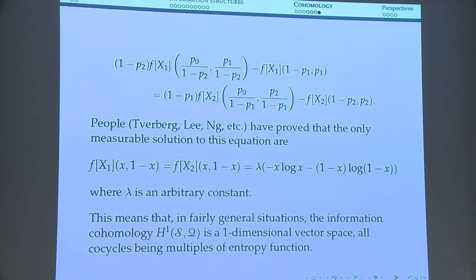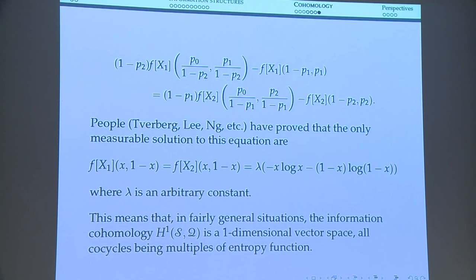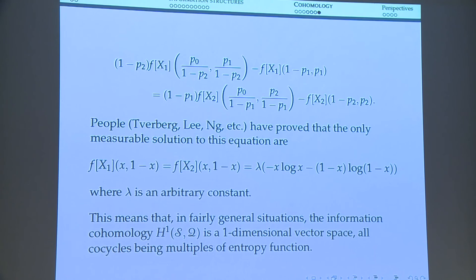So what is the moral of the story? The information cohomology — this general construction from geometry — is in many fairly general situations one-dimensional: a one-dimensional vector space composed of all real multiples of the Shannon entropy.